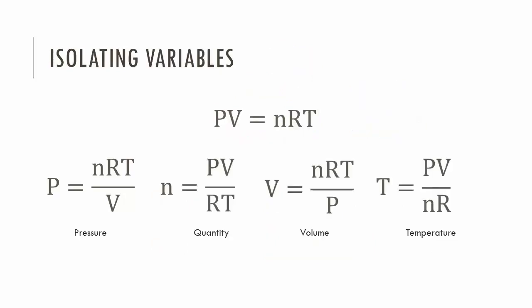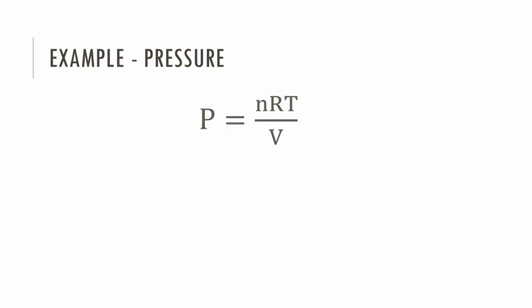We can isolate any variable we need, depending on what we're looking for. For example, we have 5 liters of gas at a pressure of 6 atmospheres. If we increase the volume to 15 liters, increase the temperature from 300 to 1200 kelvins, and reduce the quantity of gas by half, what will be the final pressure?